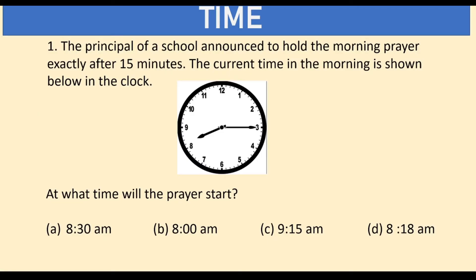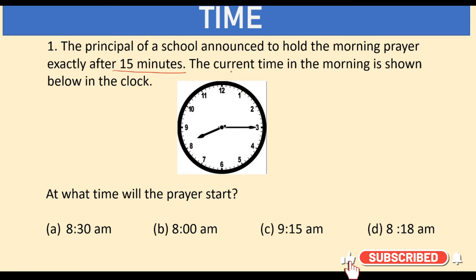Let's look at the first question: The principal of a school announced to hold the morning prayer exactly after 15 minutes. The current time in the morning is shown below in the clock. At what time will the prayer start? After 15 minutes means after a quarter, so after a quarter the minute hand will point to the answer: 8.30 a.m.